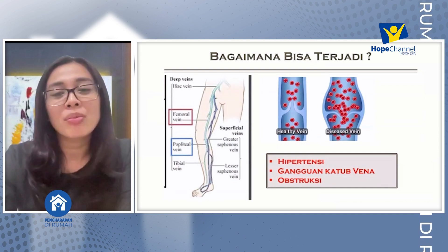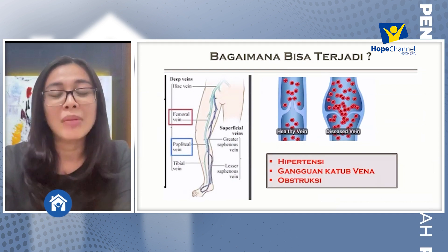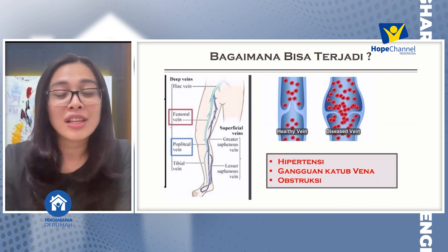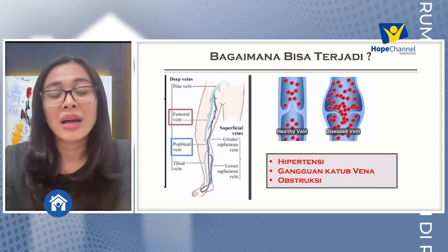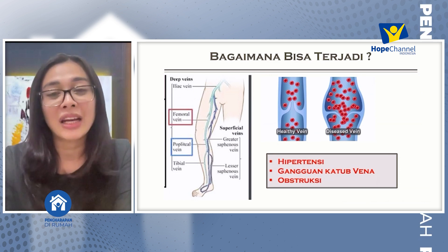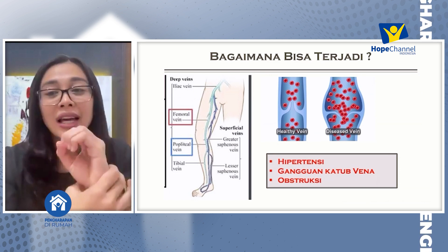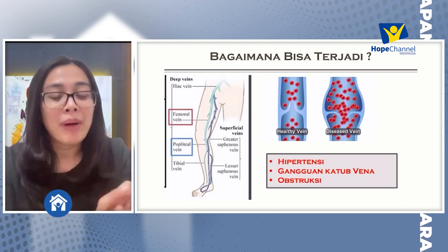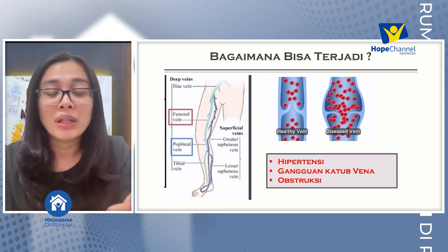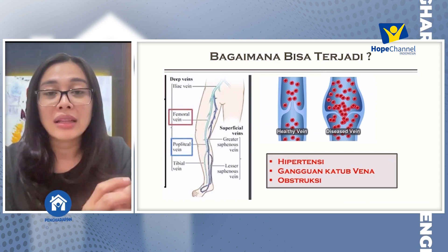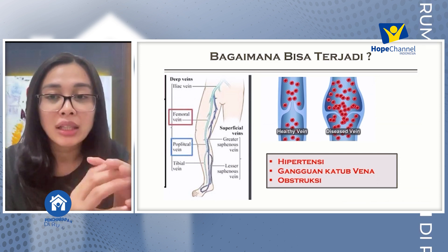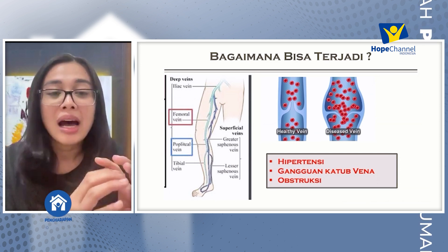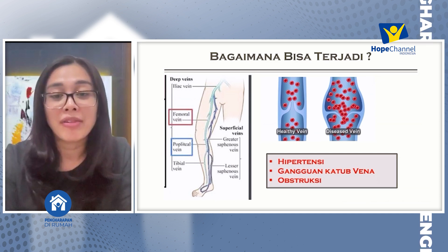Bagaimana bisa terjadi suatu varises pada manusia? Ada berbagai jenis faktor risiko yang dapat menyebabkan terjadinya varises. Salah satunya yang paling sering adalah hipertensi atau tekanan darah tinggi. Sama halnya dengan pipa, apabila berisi volume cairan yang banyak, maka lama-lama pipa tadi akan tertekan, menjadi lebih lebar atau bahkan bisa sampai pecah. Begitulah yang terjadi juga pada varises.